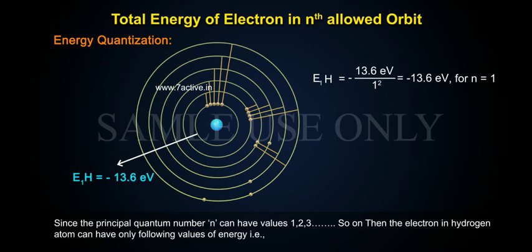That is, E1H equals to minus 13.6 electron volt by 1 square equals to minus 13.6 electron volts.